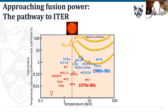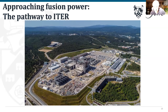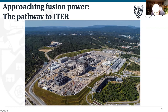That is where ITER sits. ITER is designed to produce ten times more fusion energy than is input to keep the plasma going — Q=10. It will start operating around 2025. The ITER site in southern France is huge; there is a small car visible to give a sense of scale. The tokamak sits at the heart of the site, surrounded by substantial additional infrastructure.